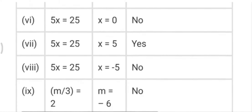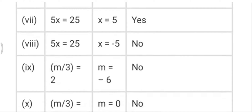In the sixth part, 5x=25. We put x=0, so 5 into 0 is 0, which is not 25, so no. In the seventh part, we put x=5, so 5 fives are 25, so it is yes.